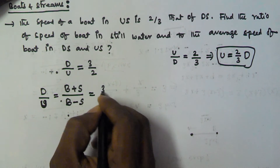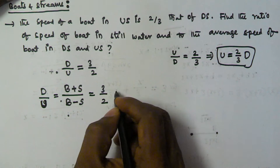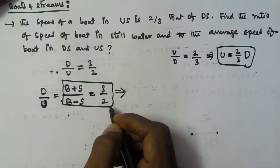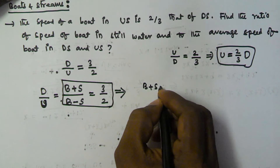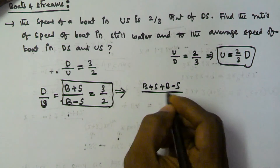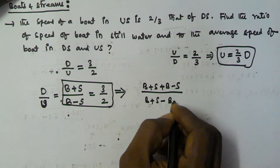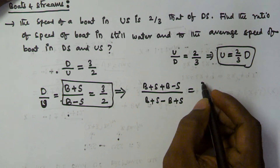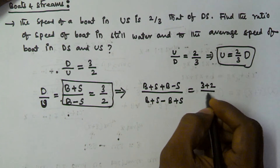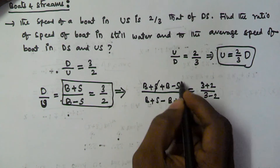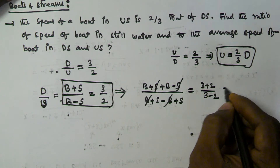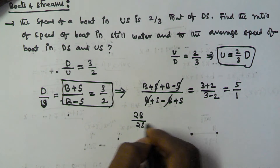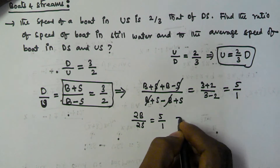So that is going to be equal to 3/2. Now we will apply componendo and dividendo on this. That gives us (B + S + B − S) divided by (B + S − B + S), which equals (3 + 2) divided by (3 − 2). The S's cancel and the B's cancel, giving 5 by 1.